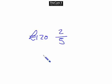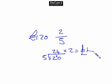OK, well one-fifth would be 5 into 120, which would give us 24. We want two-fifths, so we're timesing that by 2, which is going to give us 48. So our answer is £48.